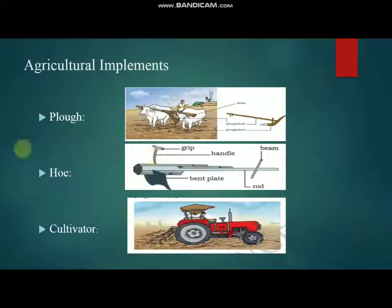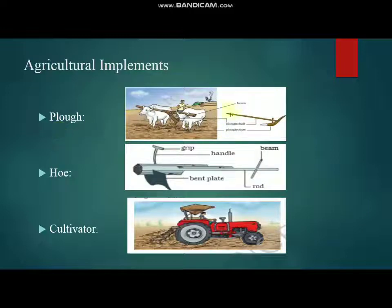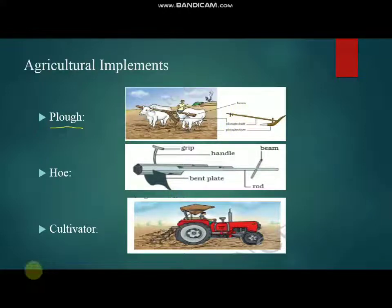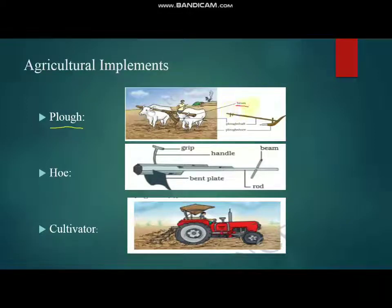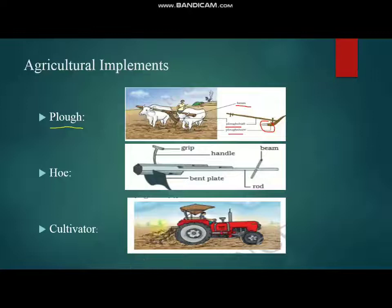Farmers use different tools for plowing or tilling of the soil. The three basic tools used are: first, the plow, which is generally used with an ox. The first part is the beam, connected with the neck region of the ox. The second part is the plow shaft and the third part is the plow shear, a metallic part used for tilling.